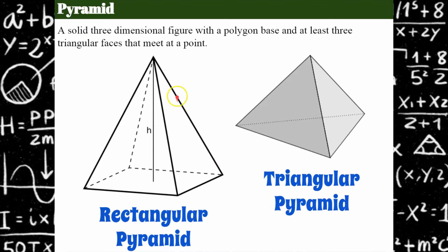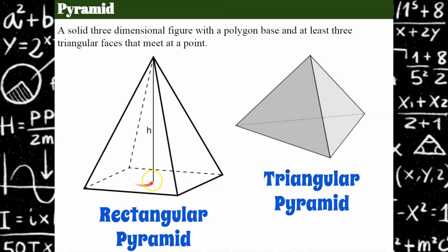A pyramid is a solid three-dimensional figure with at least three triangular faces that meet at a point. Think of an ice cream cone — that is a cone because of the circle, but it meets at a point. This solid here is a rectangular pyramid because the base is a rectangle. You have the length and width of the rectangle and the height of the pyramid. Here's a triangular pyramid — it has a triangular base and three faces that connect, each side of the triangle having a triangular face that meets at a point, for a total of four faces. The rectangular pyramid has a base and four triangular faces that meet at a point, so five faces total.